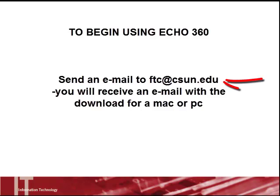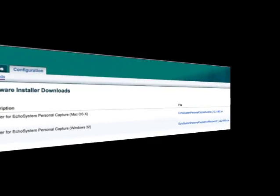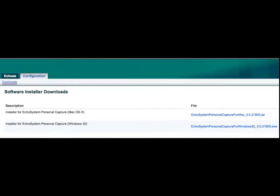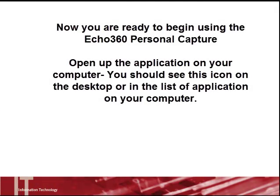Send an email to ftc at csun.edu. You will be required to come in for a brief orientation in the Faculty Technology Center to go over how to use the personal capture system, and following your orientation, you will receive an email to download the personal capture. Select the type of platform you are working on, Mac or Windows, and download the application. Now you are ready to begin using the ECHO360 Personal Capture. Open up the application on your computer.